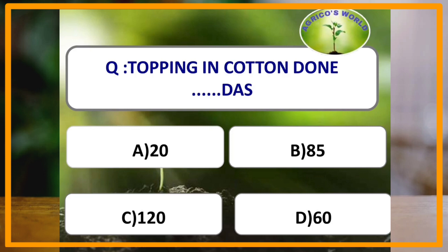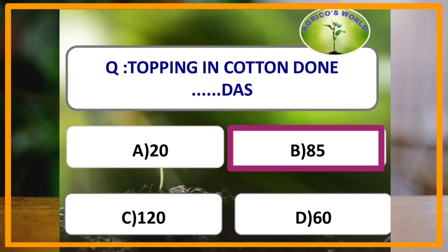Topping in cotton is done after how many days after sowing? Topping means removal of the axillary bud from the plant to encourage the growth of sympodial branches, and it also helps in good boll development. Generally, topping is done after 80 to 90 days after sowing; the answer is 85 days after sowing.